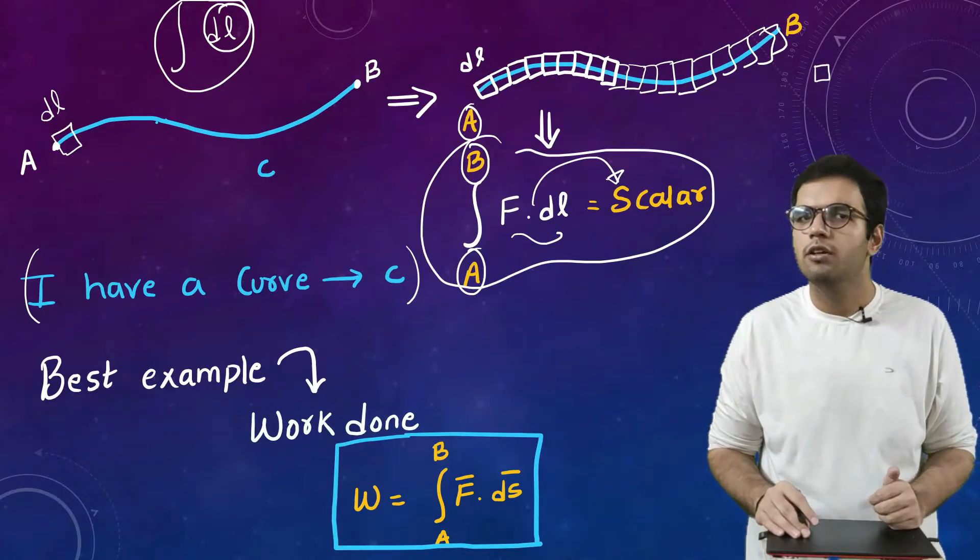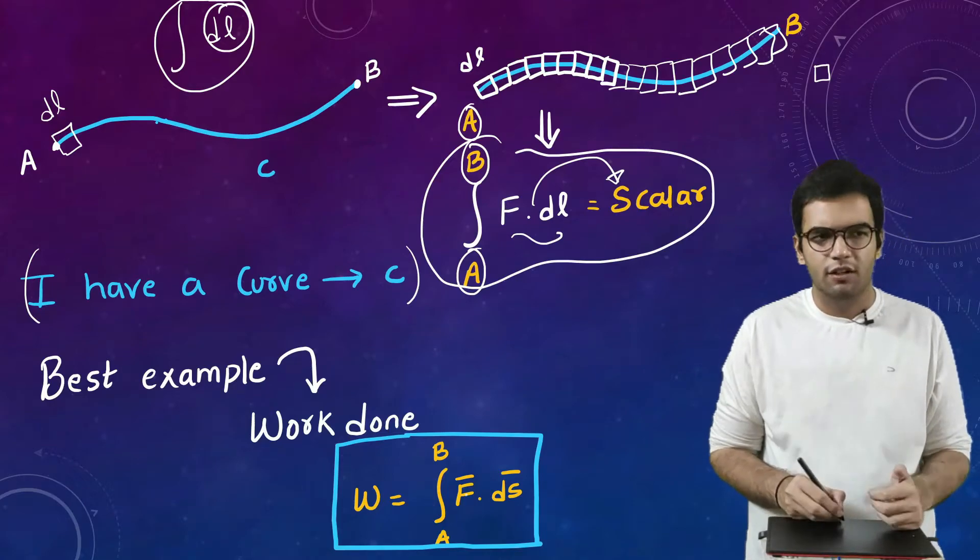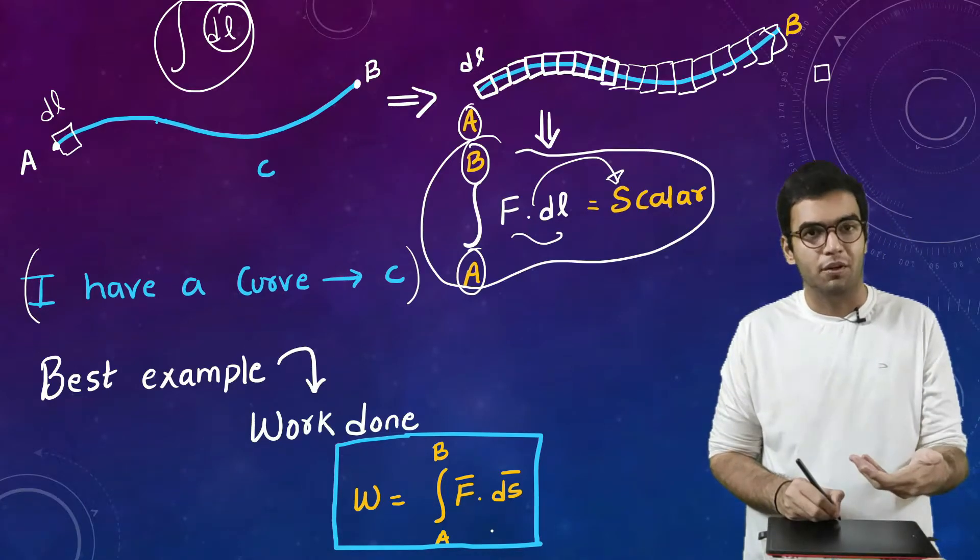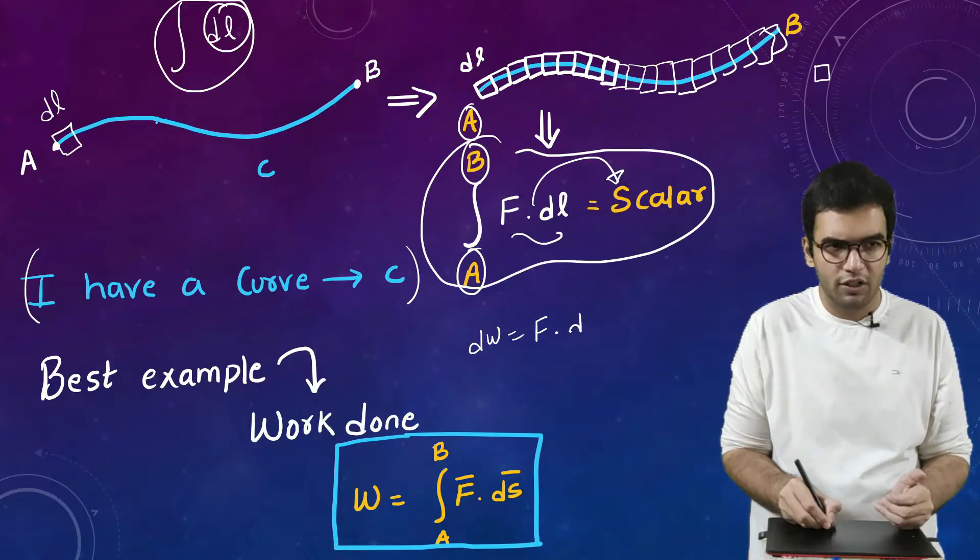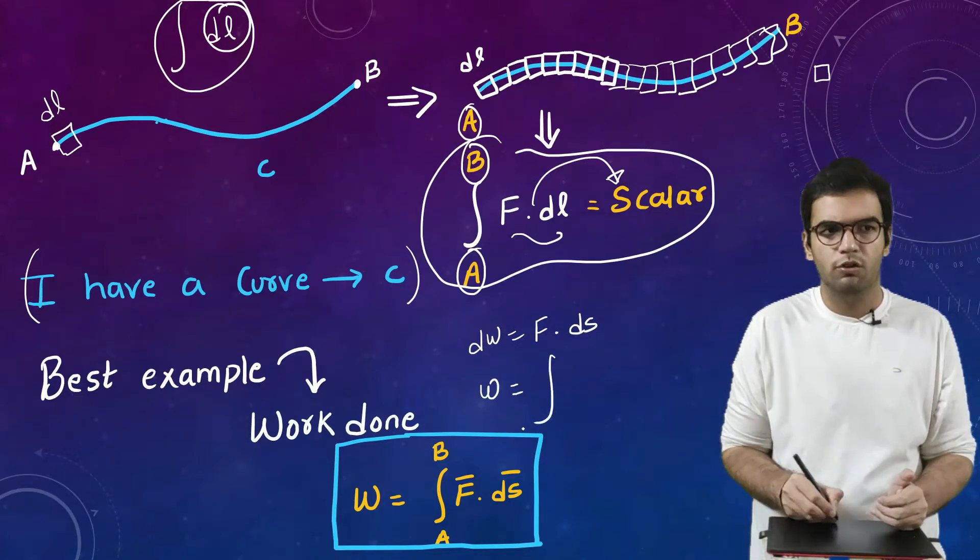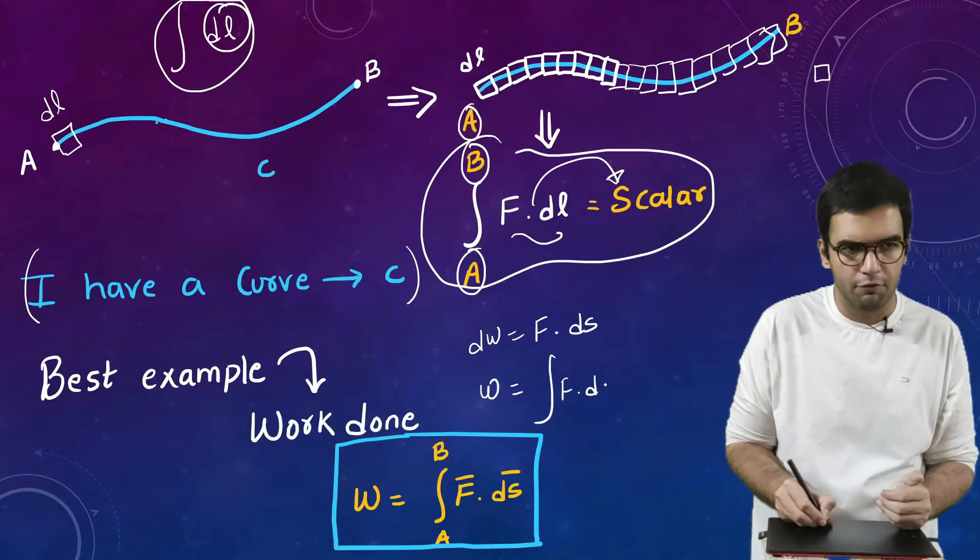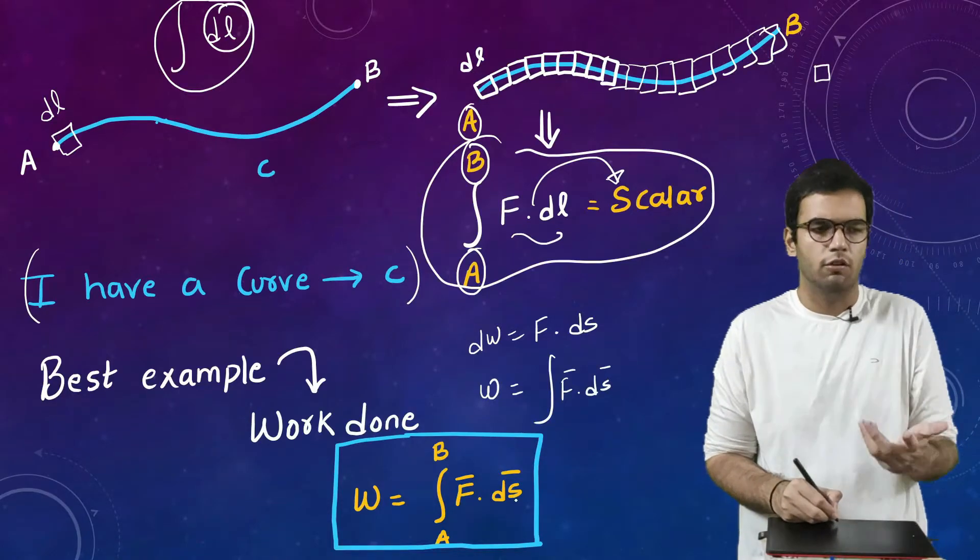So best example is suppose I want to calculate the work done. Work done is equals to the force into displacement, right? So if I want to, dW is equals to the force dot dS. But suppose I want to calculate the total work done, so then we integrate the function F with respect to dS which is displacement. So this is the best example of how line integration can be used.